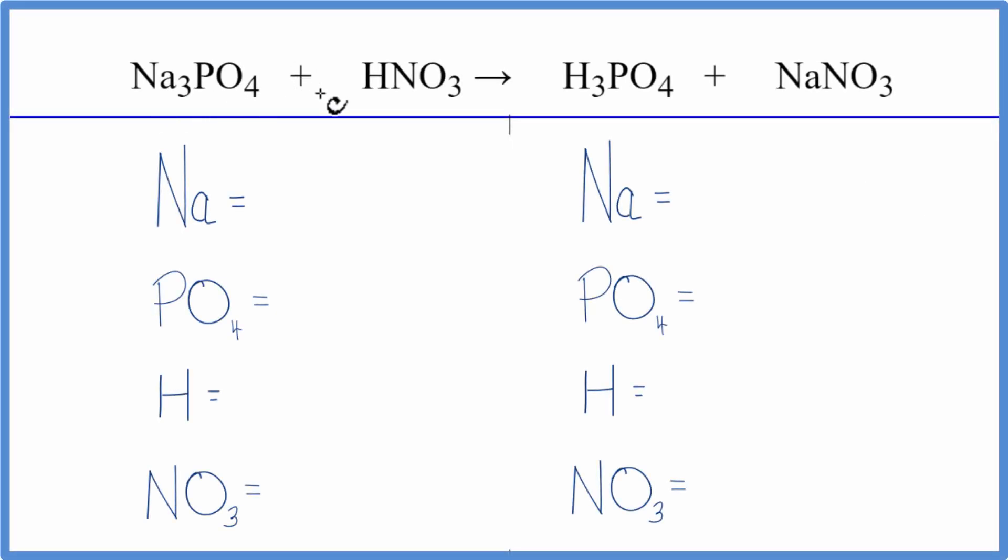To balance this equation, we have sodium phosphate plus nitric acid. This is a double displacement reaction.